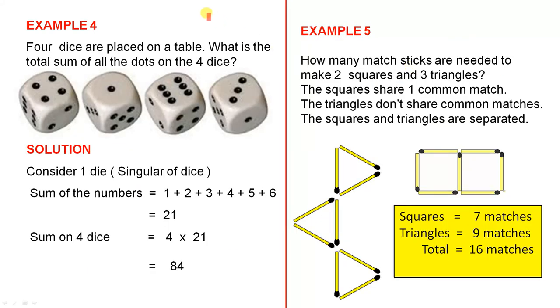Example four. Four dice are placed on a table. What is the total sum of all the dots on the four dice? Here are the four dice. Solution. Consider one die, that's the singular of dice. The actual word dice is plural, but we're just going to consider one. So let's just consider this one here. The sum of the numbers are one plus two plus three plus four plus five plus six. So when you add those up, that gives you 21.